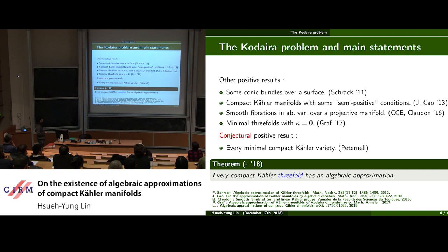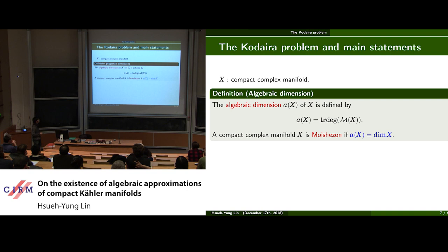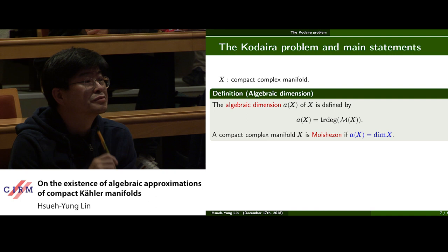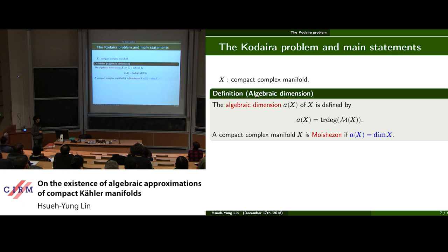The first result I would like to talk about concerns the case in dimension three. The result asserts that every compact Kähler threefold has an algebraic approximation. In order to introduce the second main result, let me recall the definition of algebraic dimension.